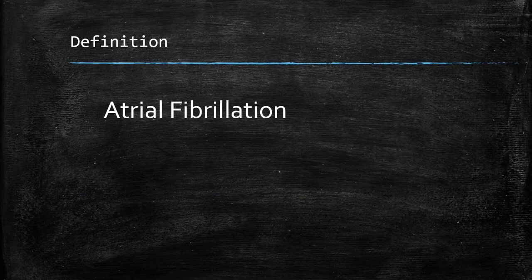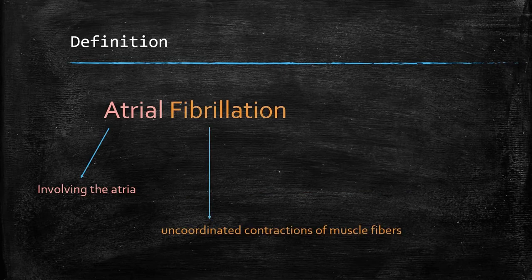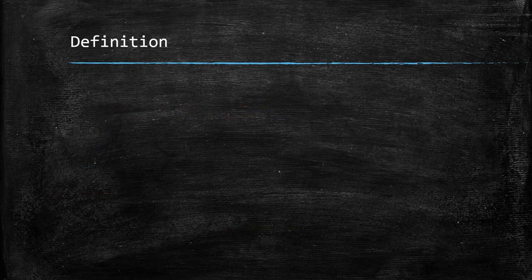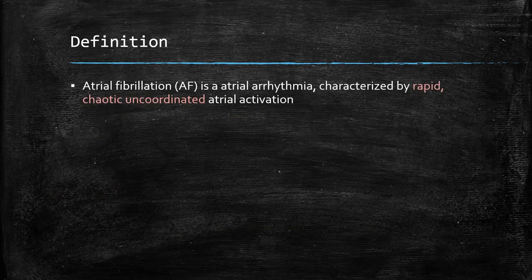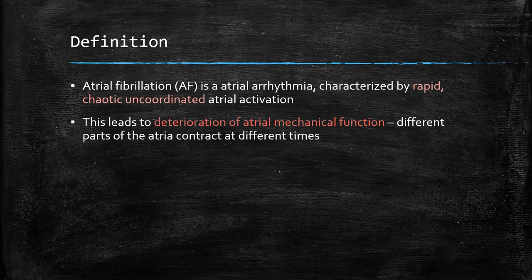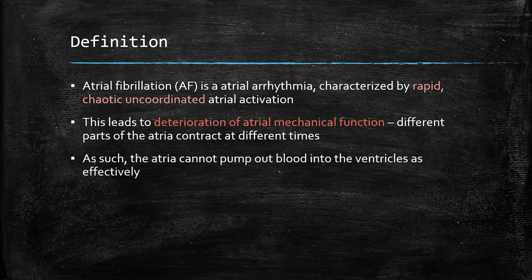Let's begin with the definition of atrial fibrillation. Atrial meaning the atria, and fibrillation meaning uncoordinated contractions of muscle fibres. So atrial fibrillation is an atrial arrhythmia characterized by rapid, chaotic, uncoordinated atrial activation. This negatively impacts atrial mechanical function, and the normal functioning of the heart is therefore impaired.